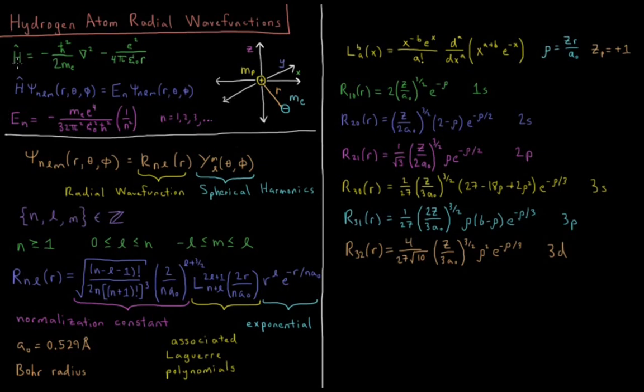So we derived our Hamiltonian operator in the first video here. H equals negative h-bar squared over 2ME, mass of the electron times the Laplacian operator, del squared. That's the kinetic energy, plus our potential energy, which is a Coulomb potential acting between these two charged particles. It's negative because they have opposite signs and are attracting one another. Potential energy is negative charge of the electron squared over 4 pi epsilon naught times r.